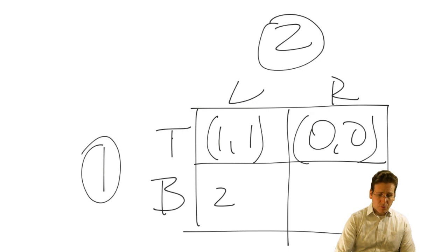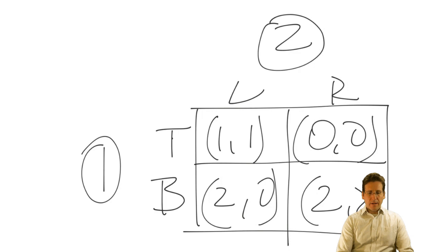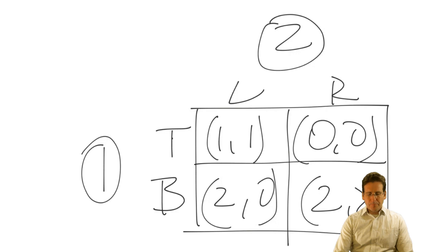So top right maybe gets 0, 0, and maybe bottom left gets 2, 0, and then bottom right would get maybe 2, 2. And that's the description of the game. We have the players, we have the actions that they have available, and we have the payoffs for every combination of actions. In such a game, we assume that player 1 and player 2 move simultaneously — when player 1 moves, he doesn't know what player 2 is doing, and when player 2 moves, she doesn't know what player 1 is doing.